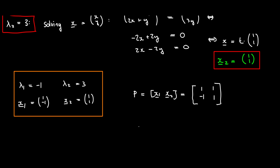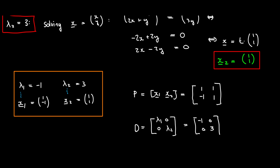Now what is D? According to the method, D is the diagonal matrix. We put lambda₁ in the first position — that's the corresponding eigenvalue for x1 — and lambda₂ in the last component, with zeros everywhere else. So D is the matrix with -1 and 3 on the diagonal and zeros off-diagonal.